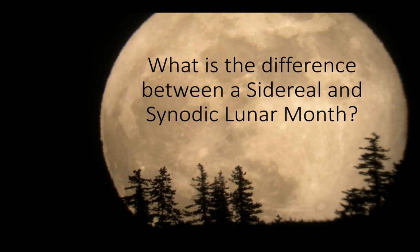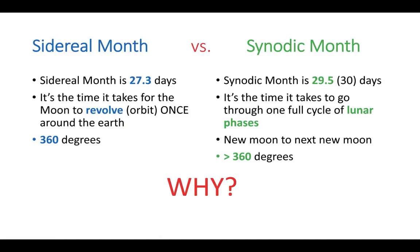The sidereal month is a measure of the amount of time it takes the moon to orbit once around the earth. The moon is the earth's natural satellite, and orbiting once around the earth is exactly 360 degrees — almost a circle — to go exactly back to the same place it started. To do that takes 27.3 days, and that's what we call the sidereal month.